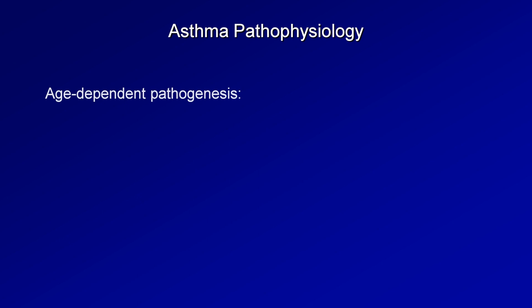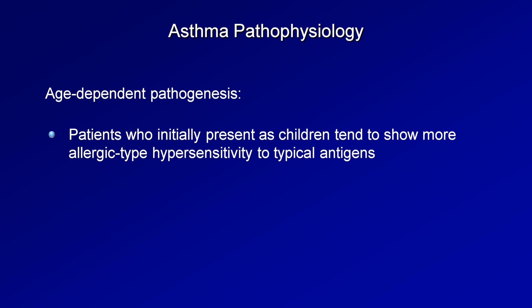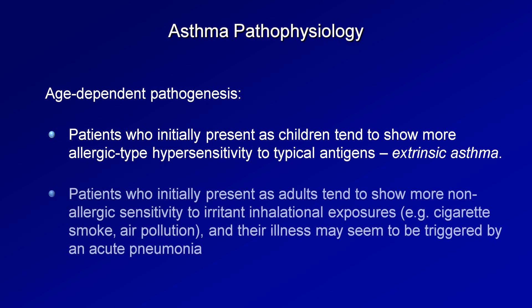There is a slight age dependence to the pathogenesis of asthma. Patients who initially present as children tend to show more allergic-type hypersensitivity to typical antigens — this is known as extrinsic asthma. In contrast, a minority of patients initially present as adults, showing more non-allergic sensitivity to irritant inhalational exposures such as cigarette smoke and air pollution. This illness may seem to be initially triggered by acute pneumonia, and it's known as intrinsic asthma.